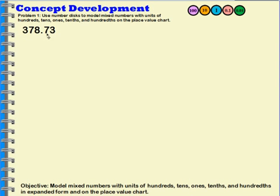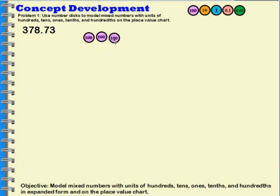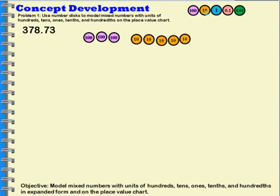I'm going to first represent this number using our place value disks — these little disks over here. We used them before. So first I'm going to show my hundreds. I have three hundreds. So there are my three hundreds. Then I have seven tens. Now I have eight ones.